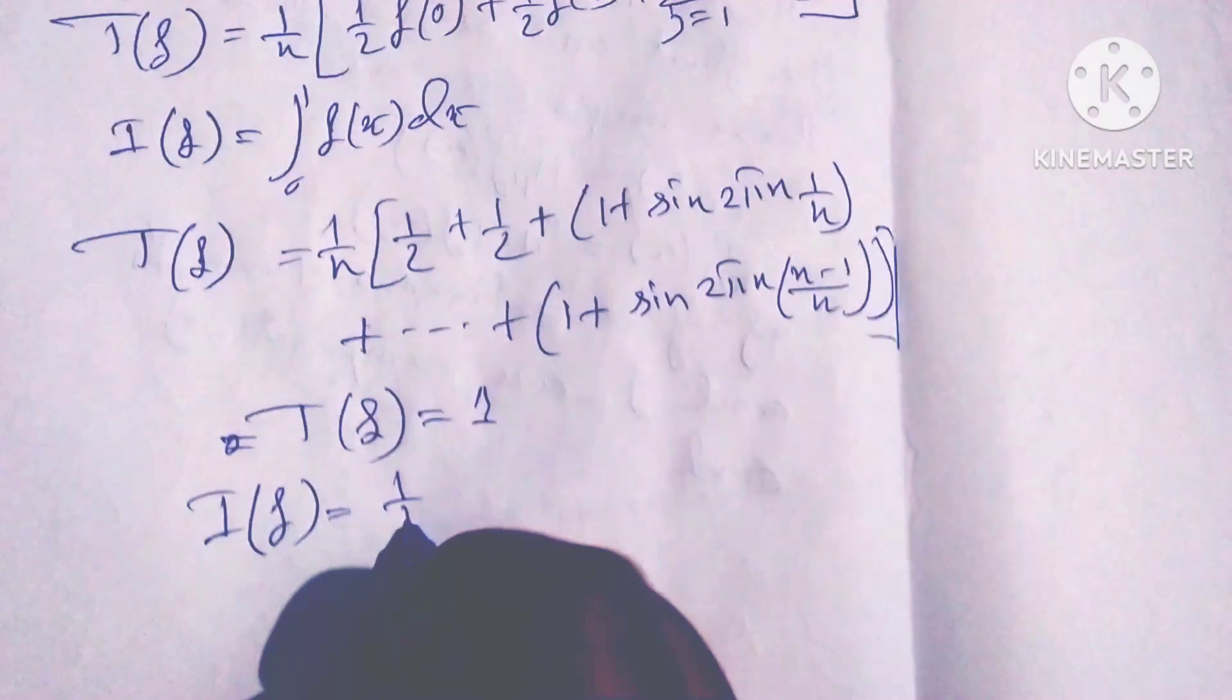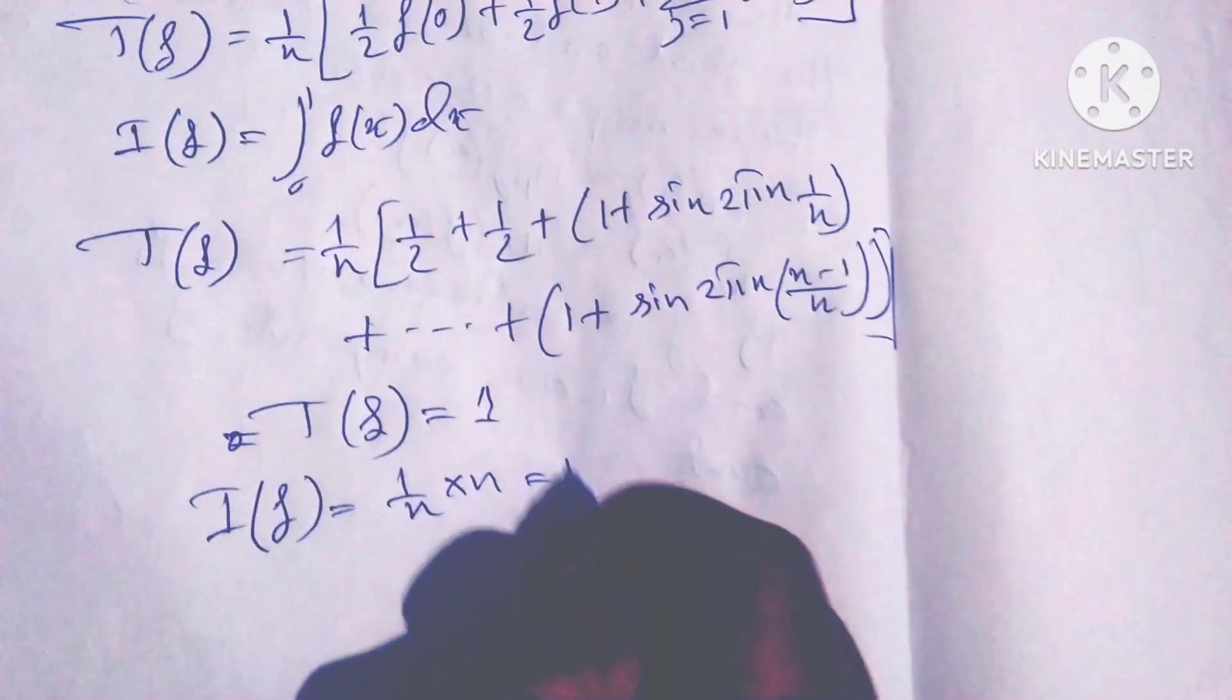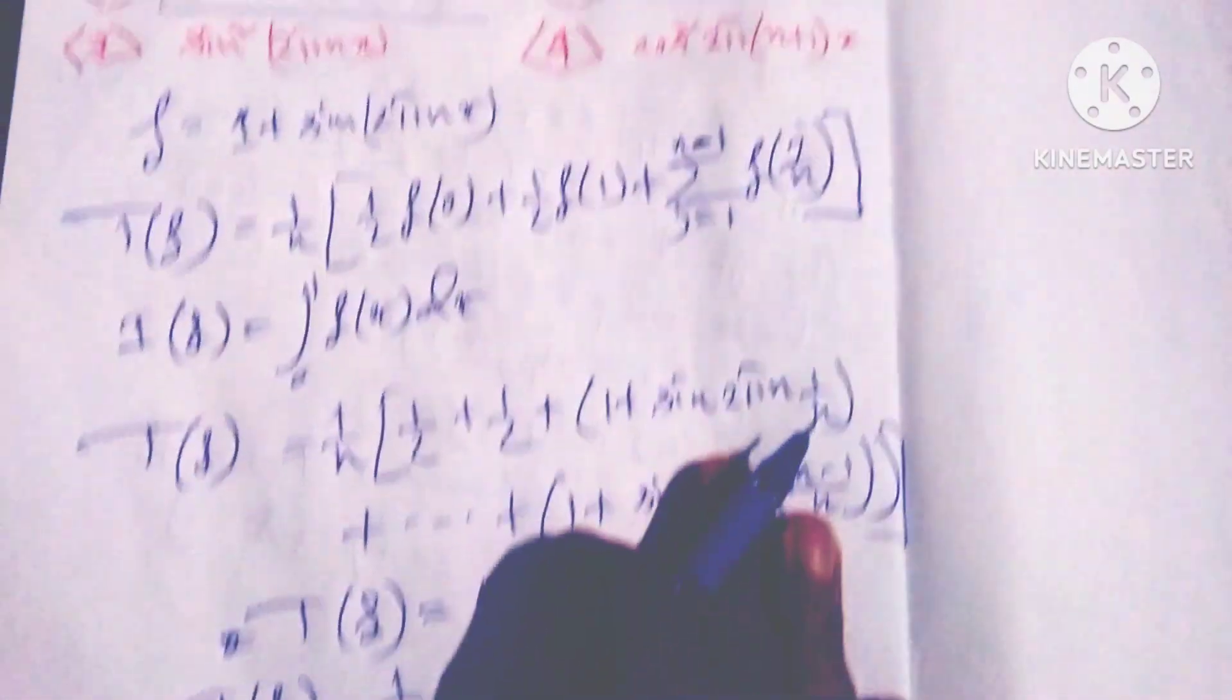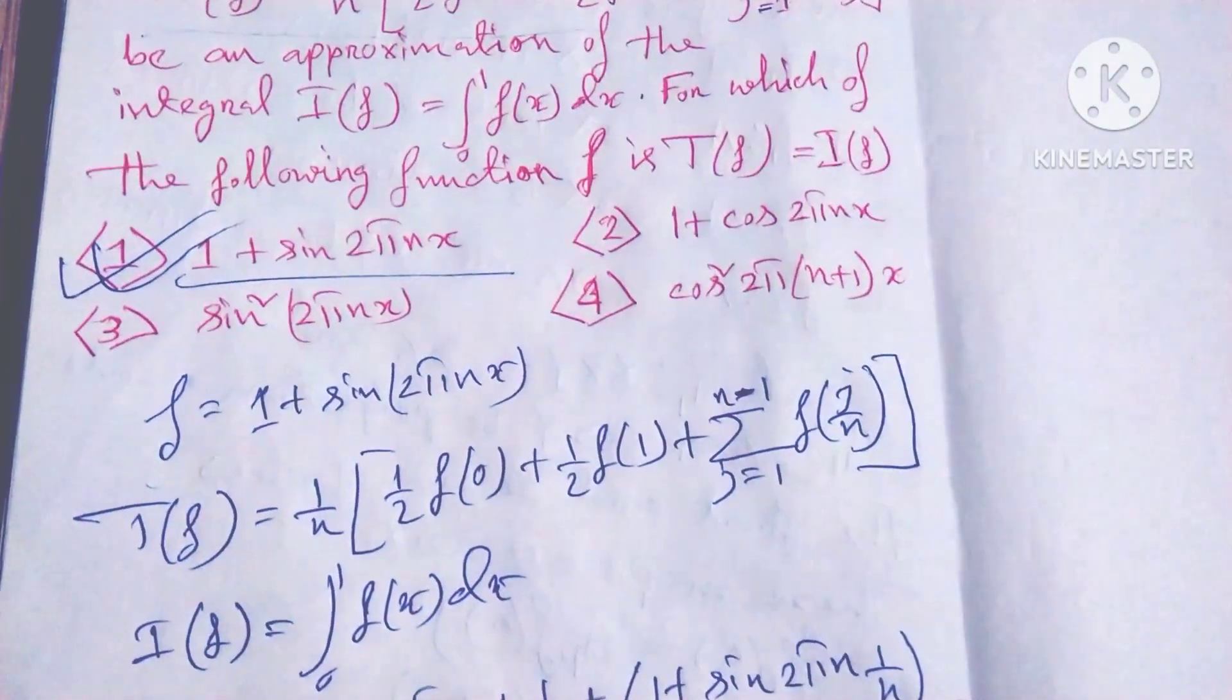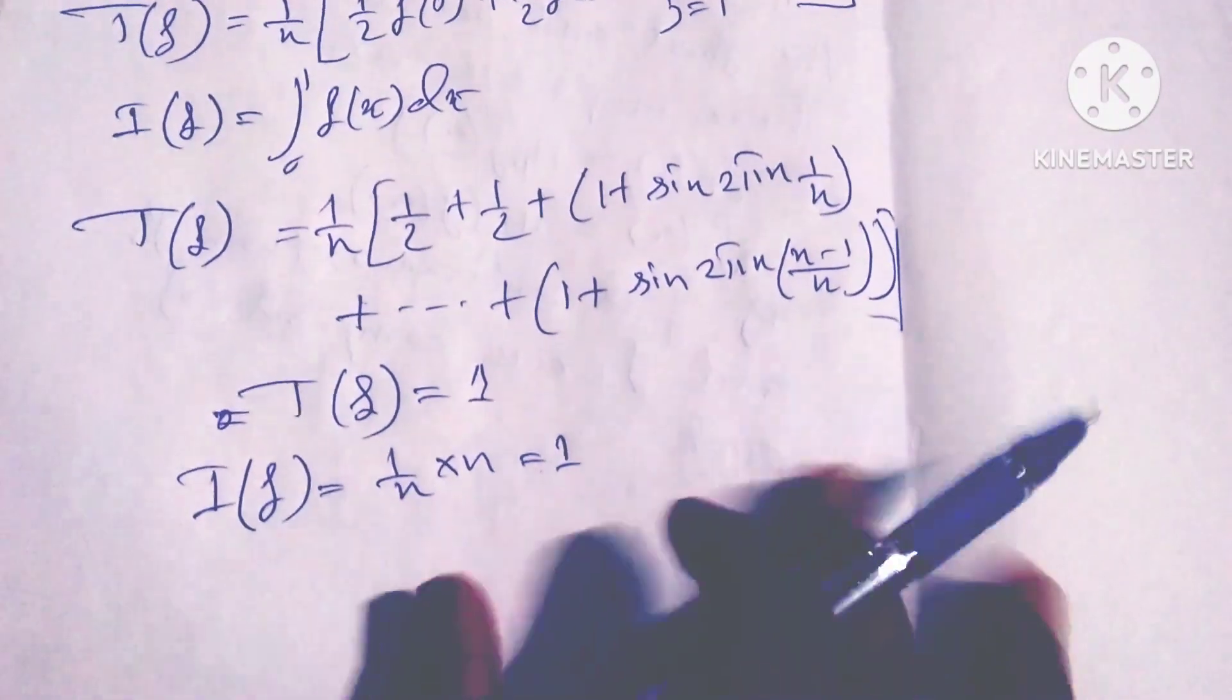And I(f), T(f) equals 1 by n, equals 1 by n times n equals 1. So option 1, option 1 is correct. And now we are going to discuss option 2.